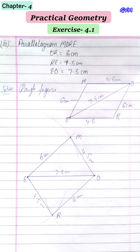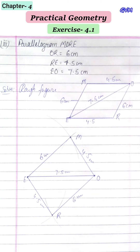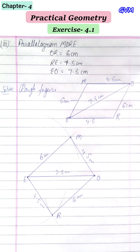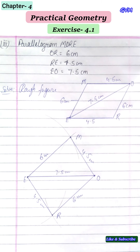The next part of this question involves a rhombus. In a rhombus, all four sides are equal, so if one side and one diagonal are given, you already know all four sides and can construct it easily. In this exercise we have learned how to construct a quadrilateral when four sides and one diagonal are given. Do all constructions in your notebook and complete the remaining parts of this exercise. See you in the next video — keep practicing and keep learning!